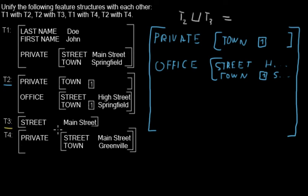As you can see, T3 has a property called street with value Main Street. And now the question is, is this street the same one as this one in office or as this one in private?